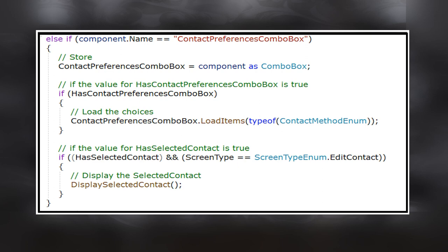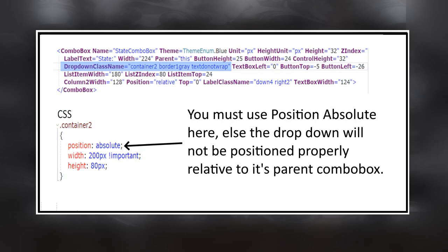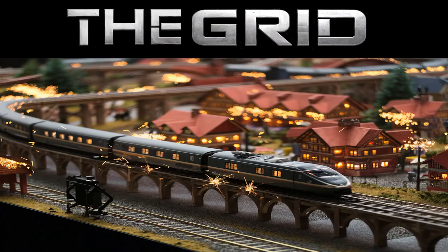Another way to load the combo box is to pass in the type of an enumeration. Here I load the checklist combo box with the choices from the ContactMethod enum. Use the typeof command to get the type for an enum. When opening an existing contact in edit mode, I have to write a little custom code in the displaySelectedContact method to check the items that were previously saved. Note the drop-down class name of the combo box — the only way I could get the drop-down menu to display properly was to use an external CSS class. I tried using a class in DataJuggler.Blazor.Components.CSS, although I could never get this to work.